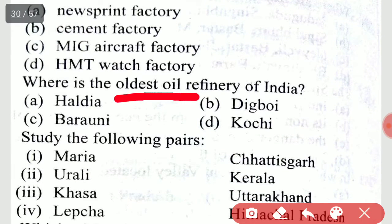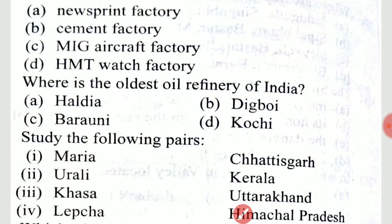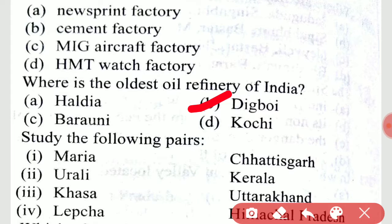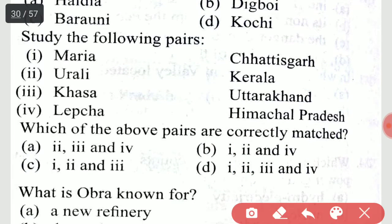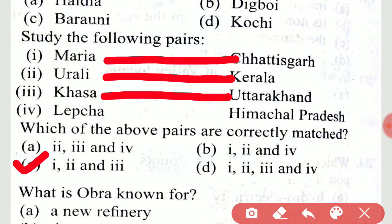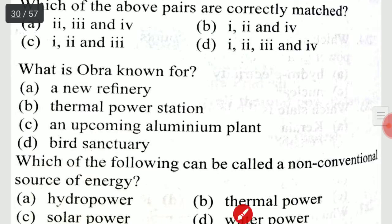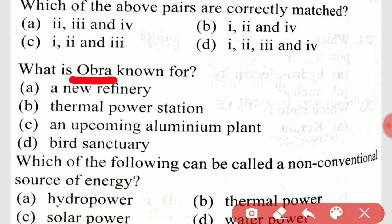Where is the oldest oil refinery of India? The oldest oil refinery of India is in Digboi. Study the following pairs — which of these both pairs are correctly matched? The right option is option C: 1, 2, and 3 are correct; 4 is not correct. These are some tribes and their locations. What is Obra known for?